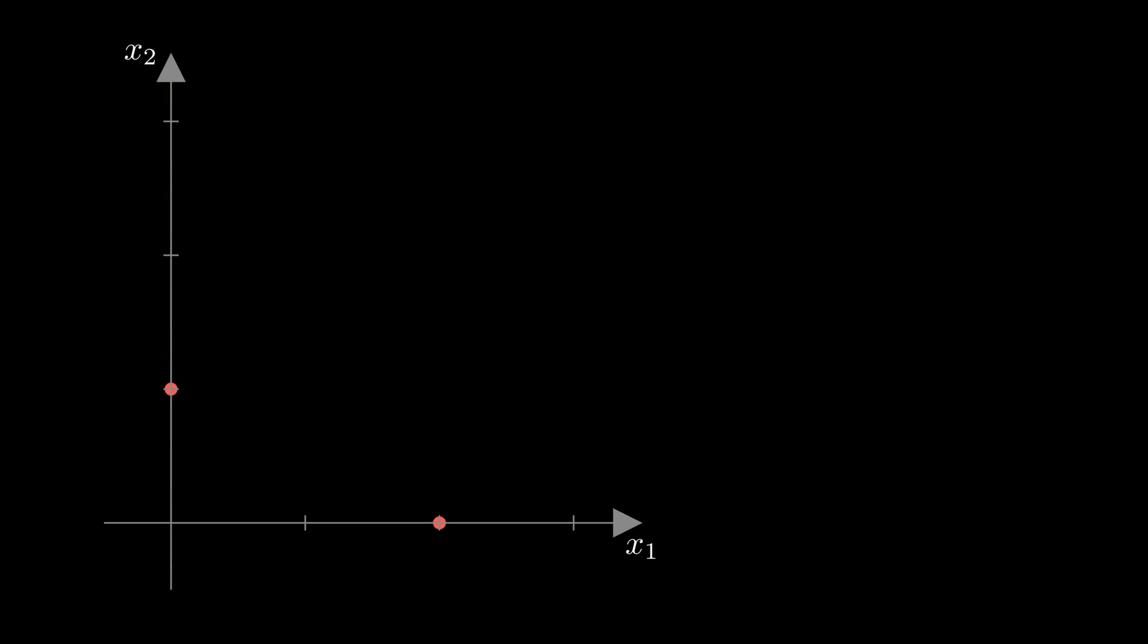We can also think of these two numbers as coordinates of a single point in 2D space, where x1 goes on the horizontal axis and x2 on the vertical. Draw an arrow from the origin to this point, and boom, we've got our data represented as a vector.